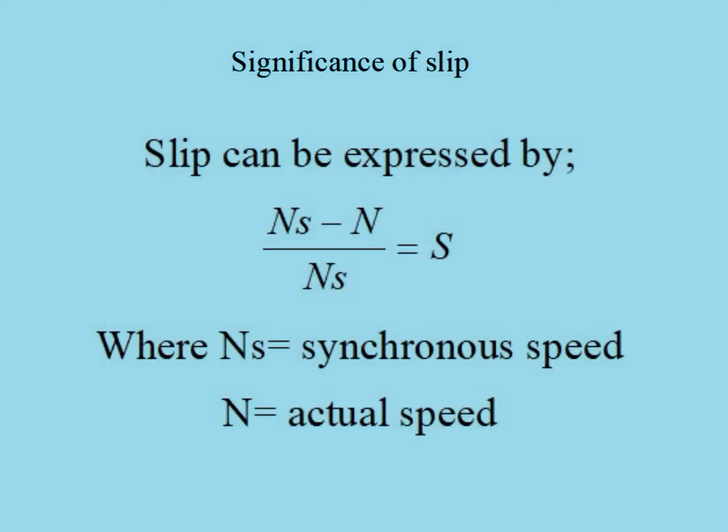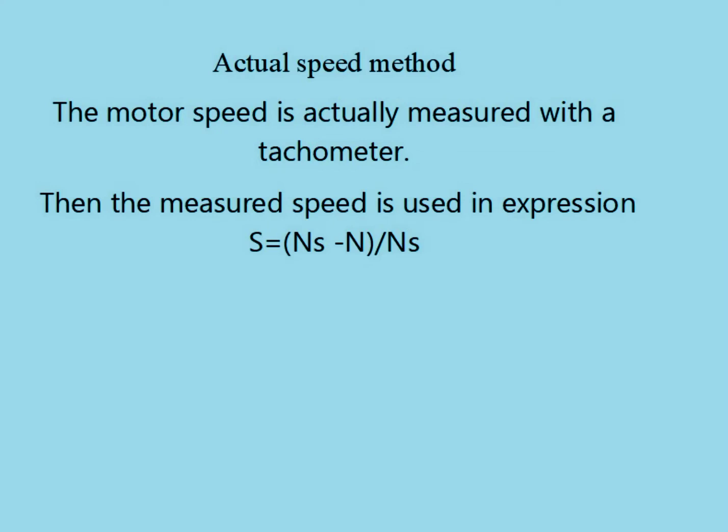Mathematically, it can be expressed as the following equation, where ns is the synchronous speed and n is the actual speed. The first method is the actual speed method. The motor speed is actually measured using the tachometer and the slip is then calculated using the equation given below.